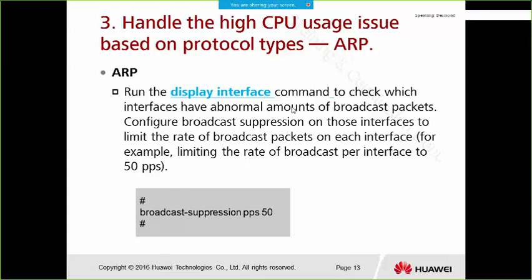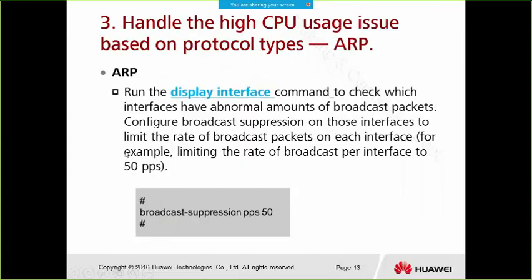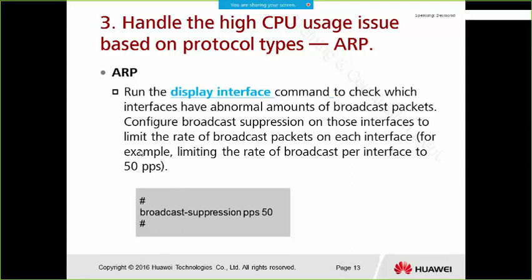We should handle the CPU usage issue based on protocol types — there are many packet types and we will address them one by one. First, if the cause is ARP, run the 'display interface' command to check which interfaces have abnormal amounts of broadcast packets. Then configure broadcast suppression on those interfaces to limit the rate of broadcast packets — for example, limiting the broadcast rate to 50 packets per second per interface.